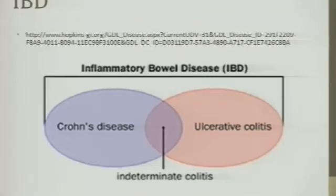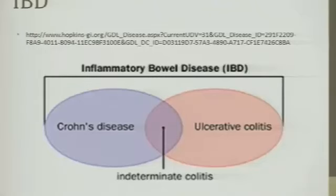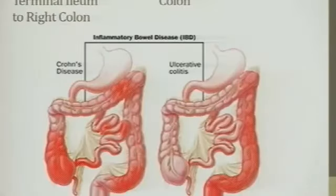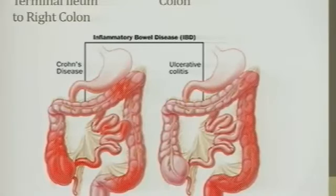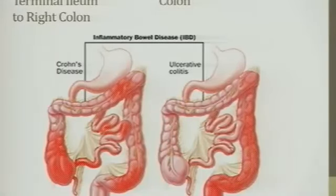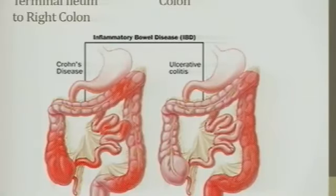Looking at some material from a Hopkins website — you've got Crohn's and ulcerative colitis, but there can also be a crossover. I think they're kind of on a spectrum of bowel inflammation. The locations they affect are interesting — I wonder what the physiology is behind why they affect different areas.